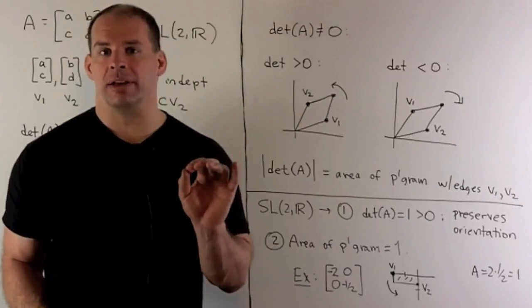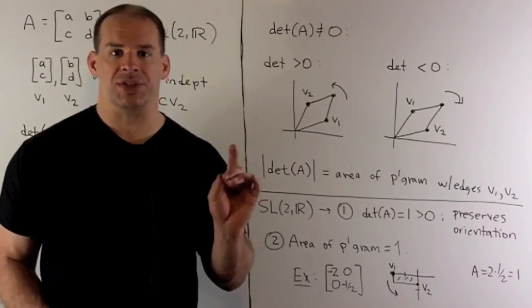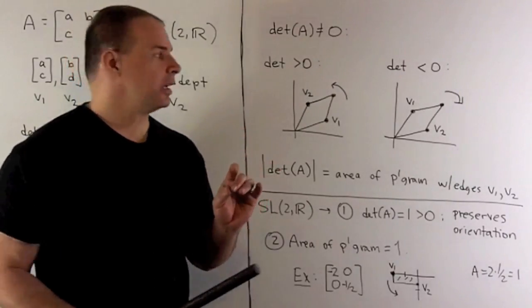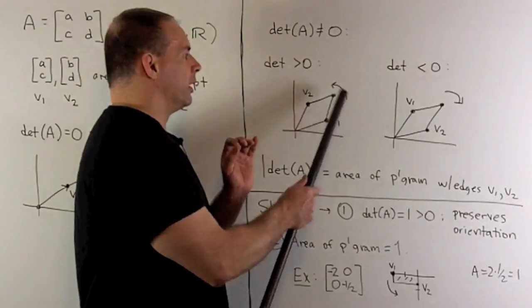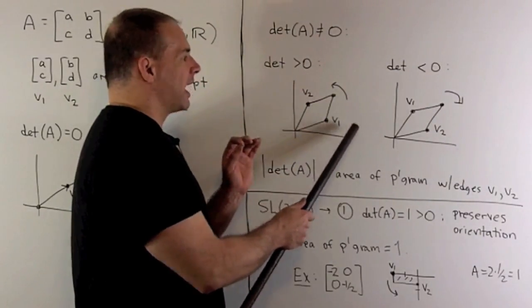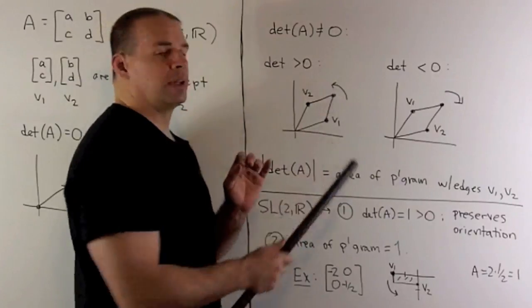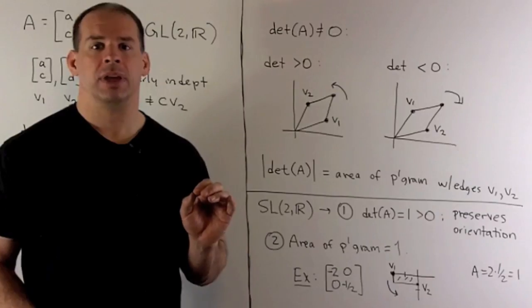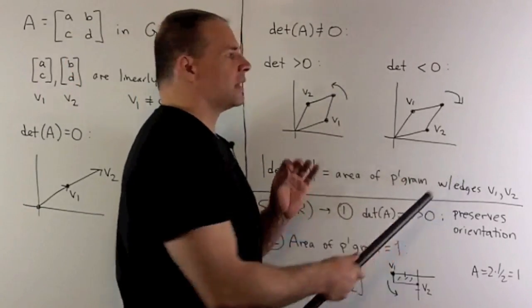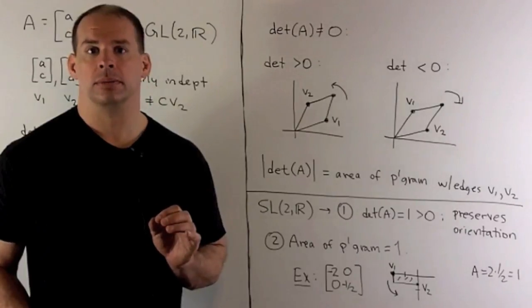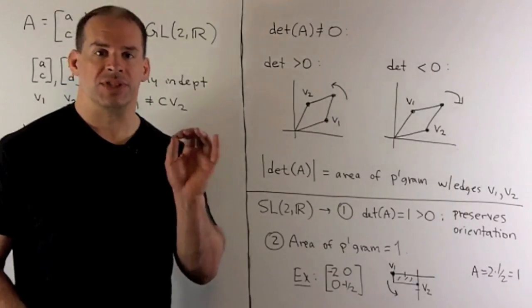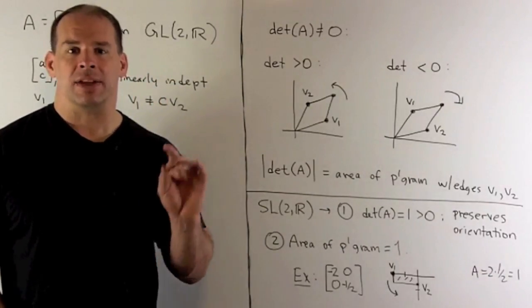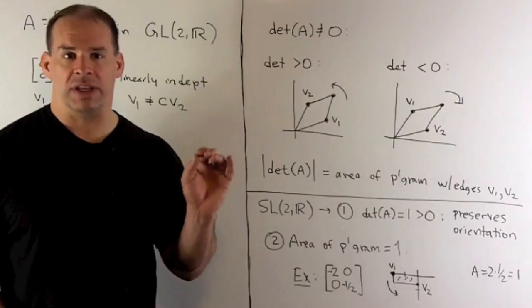From that, we can interpret determinant as follows. So, there's going to be two pieces here. First part of the determinant, the sign. If we draw an arrow going from V1 to V2, if we're going in the counterclockwise direction, we'll catch that when the determinant is greater than zero. If we have it going in the clockwise direction, that's going to mean the determinant is less than zero. For the second part, if we take the absolute value of the determinant, that's going to give us the area of the parallelogram with edges V1 and V2.